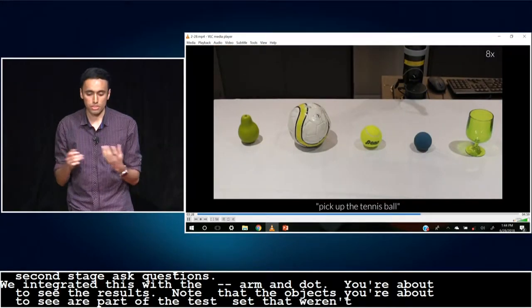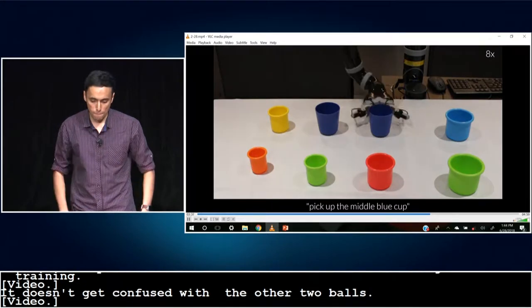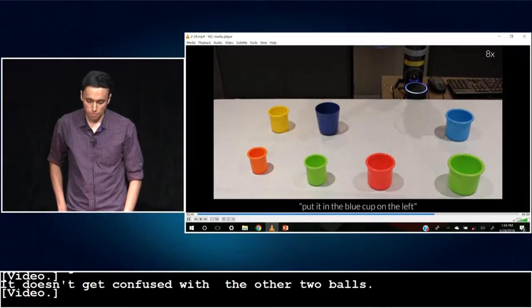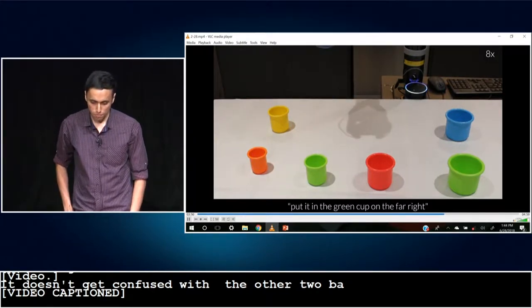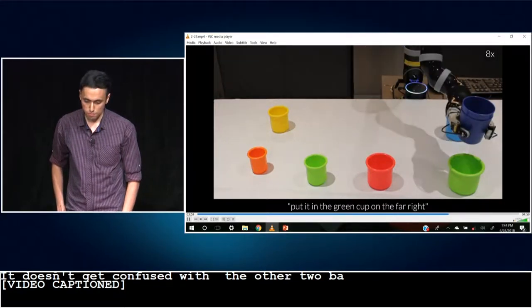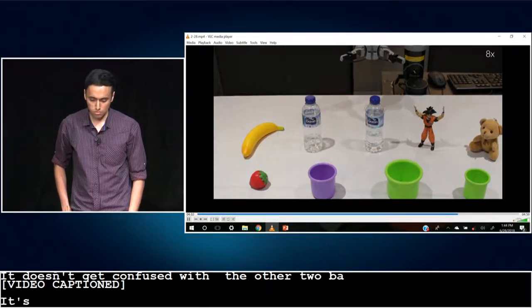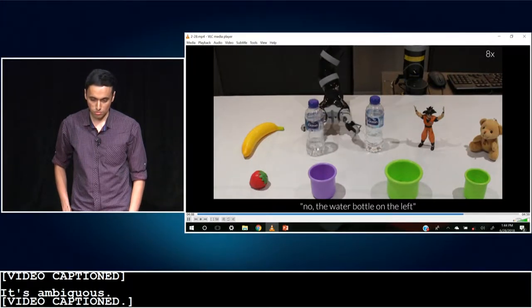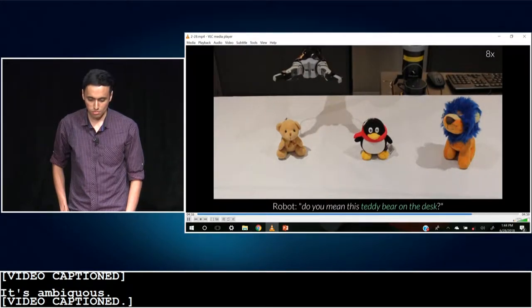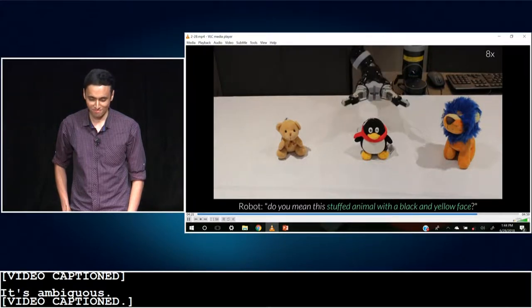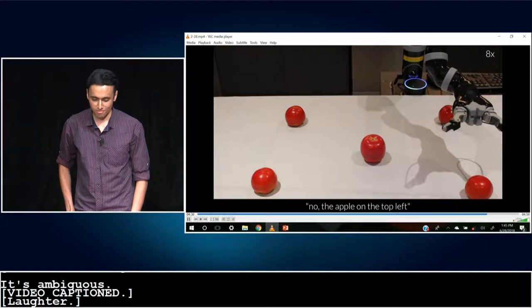Pick up the tennis ball. It doesn't get confused with the other two balls. Pick up the middle blue cup. Put it in the blue cup on the left. Pick up the left blue cups. Put it in the green cup on the far right. Pick up the water bottle. It's ambiguous. Do you mean this water bottle on the right? No. The water bottle on the left. Pick up the stuffed animal. Do you mean this teddy bear on the desk? No. Do you mean this stuffed animal with a black and yellow face? Go ahead.